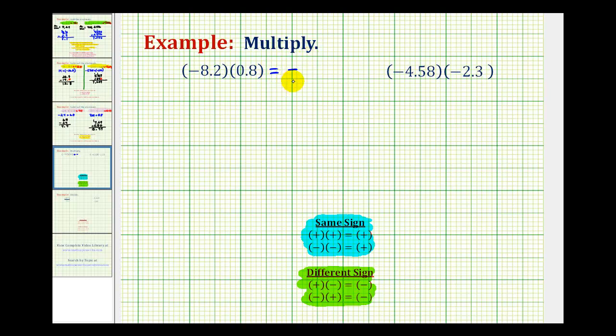Now that we know the sign, we just need to ignore the signs and multiply. So we'll have 8.2 times 0.8. Now remember the way we do this is, we count the total number of decimal places to determine how many decimal places the product must have. We have one decimal place in the first decimal and one decimal place in the second decimal. So the product must contain a total of two decimal places.